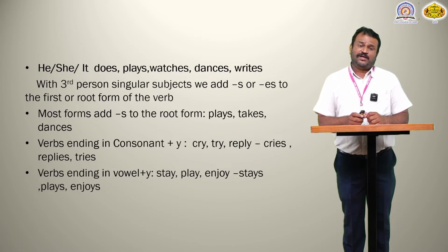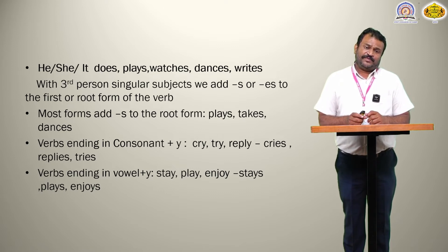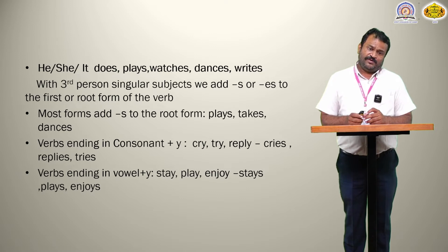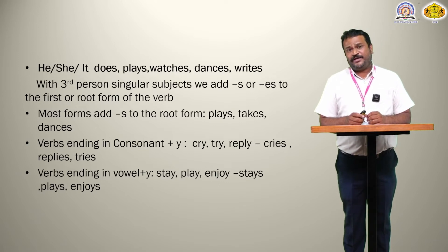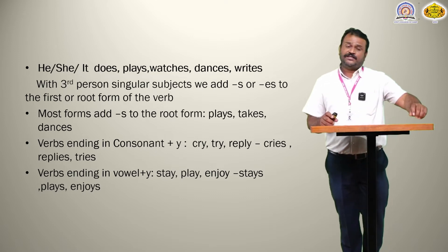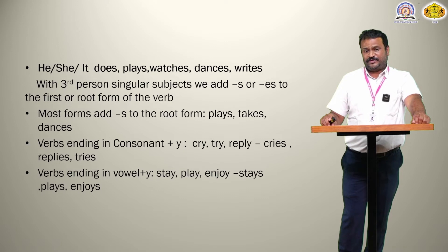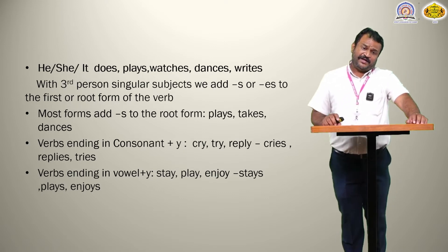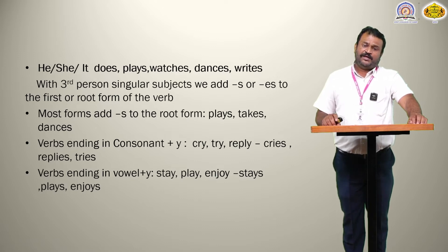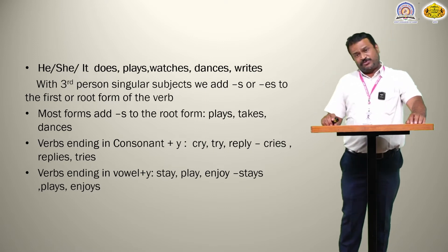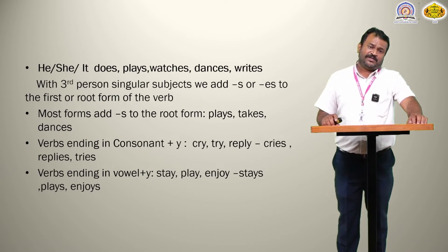There are some verbs which end in a consonant plus 'y'. Then we remove the 'y' and add 'ies'. For example: cry becomes cries, try becomes tries, reply becomes replies. And for verbs ending in a vowel plus 'y' — such as stay, play, enjoy — we simply add 's': stays, plays, enjoys. We use these forms when talking about the third person singular.